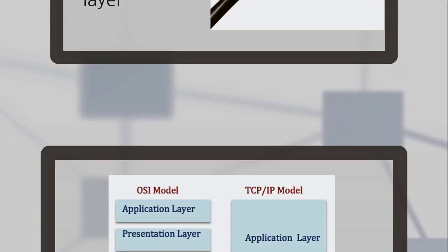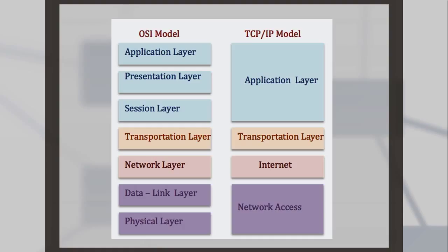Now we're going to talk about the TCP/IP model, which is a simplified model of the OSI. It has only four layers: the application layer, the transportation layer, the internet layer, and the network access layer.